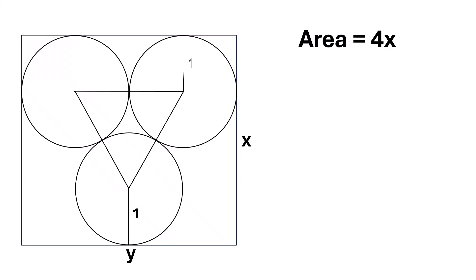Again, this line also represents the radius of a circle. So the length of this line will also be 1. This is the radius of one circle, and that is the radius of another circle. So the length of each side of the triangle is 2.